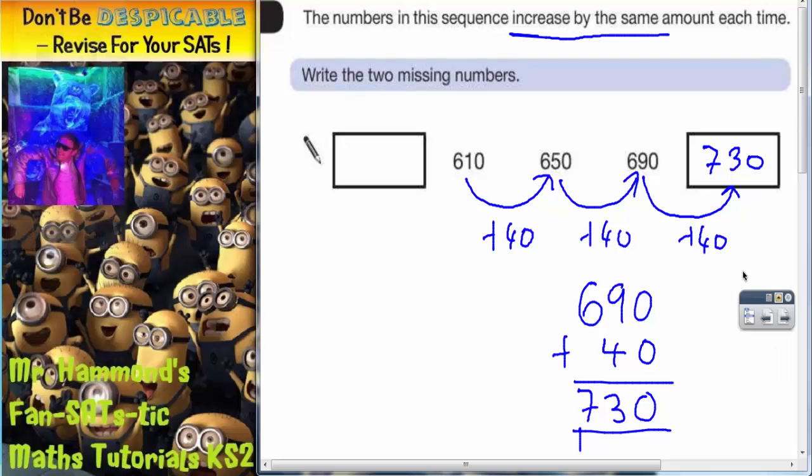So you can see that it is 730. Now the problem we've got is the other missing number is at the start of the sequence. So we've got to work in reverse.